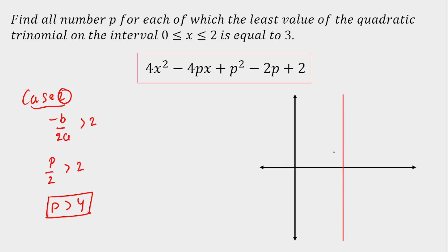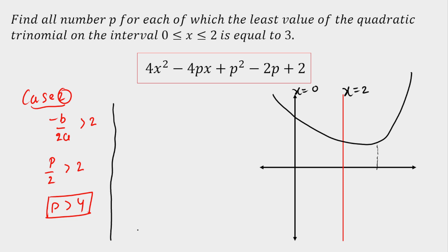Let me show this graphically. Drawing the x-axis, y-axis, the line x = 2, and x = 0. The vertex is on the right-hand side of 2, so the parabola looks like this with the vertex beyond x = 2. From the graph from 0 to 2, the least value is coming at x = 2. That means f(2) should be equal to 3, since the least value in this interval is f(2).